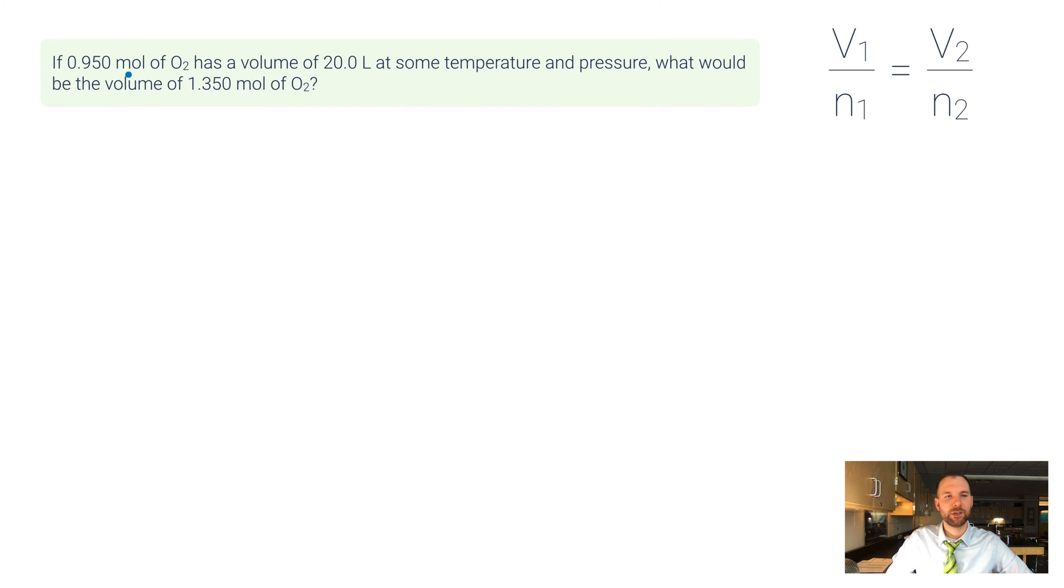If 0.950 moles of O2 has a volume of 20 liters at some temperature and pressure, what would be the volume of 1.350 moles of O2? Well, these two pieces of information go together on the same side, so let's set this as n1 and this is V1.